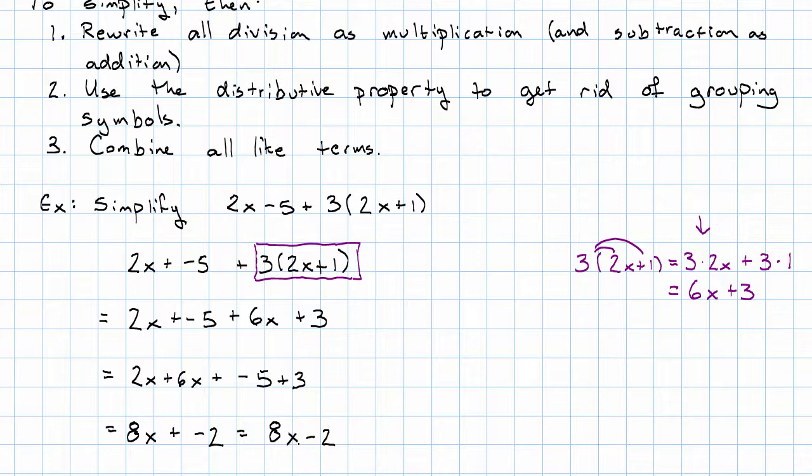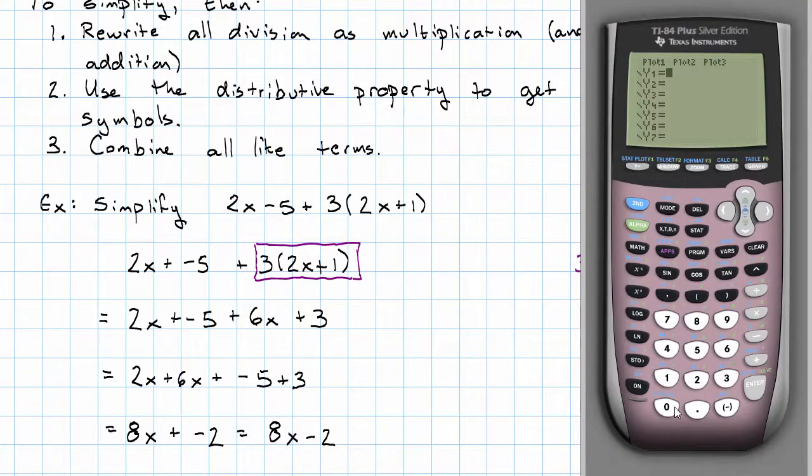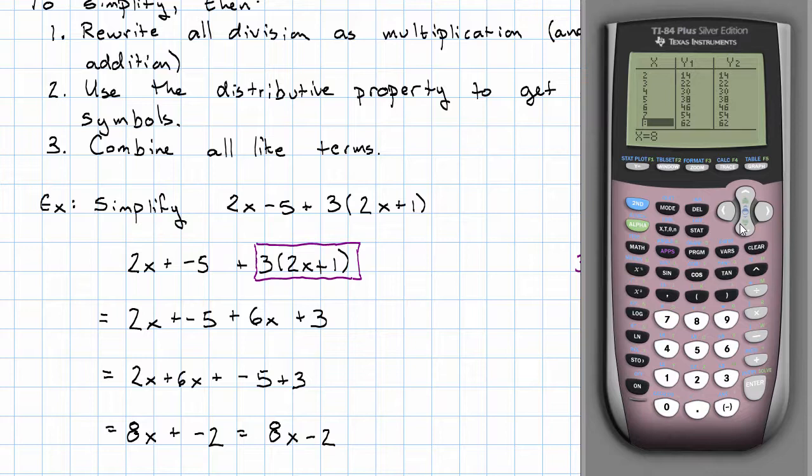Was that really equivalent to my original expression? Let's use our calculator to make sure. I'm going to enter my original expression, 2x minus 5 plus 3 times the quantity 2x plus 1, just as I see it. And my answer, 8x minus 2. Second and then graph gets me the table. Looking through, I see that those agree for all the x values I'm trying. Those really do seem to be equivalent.